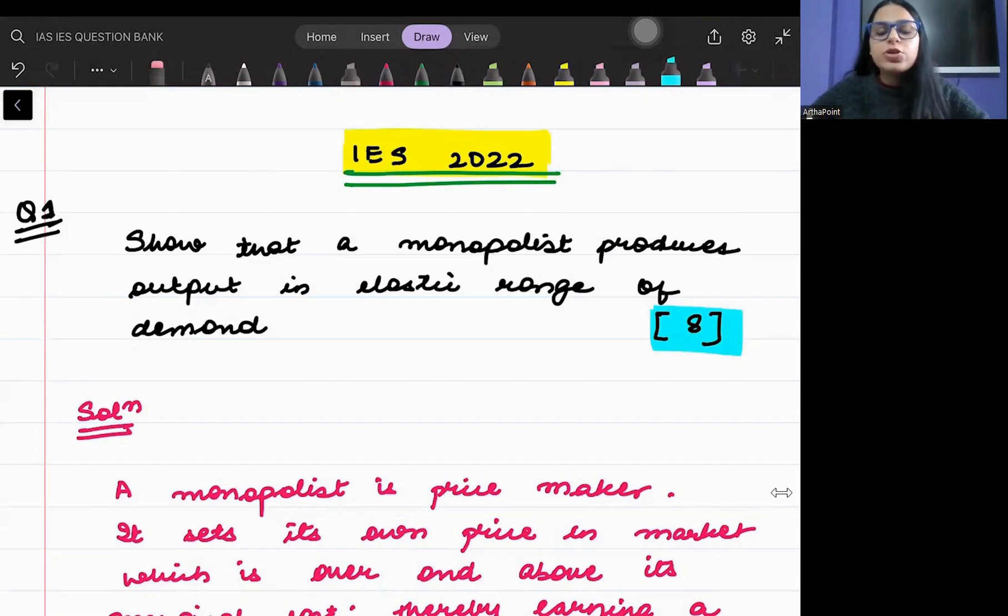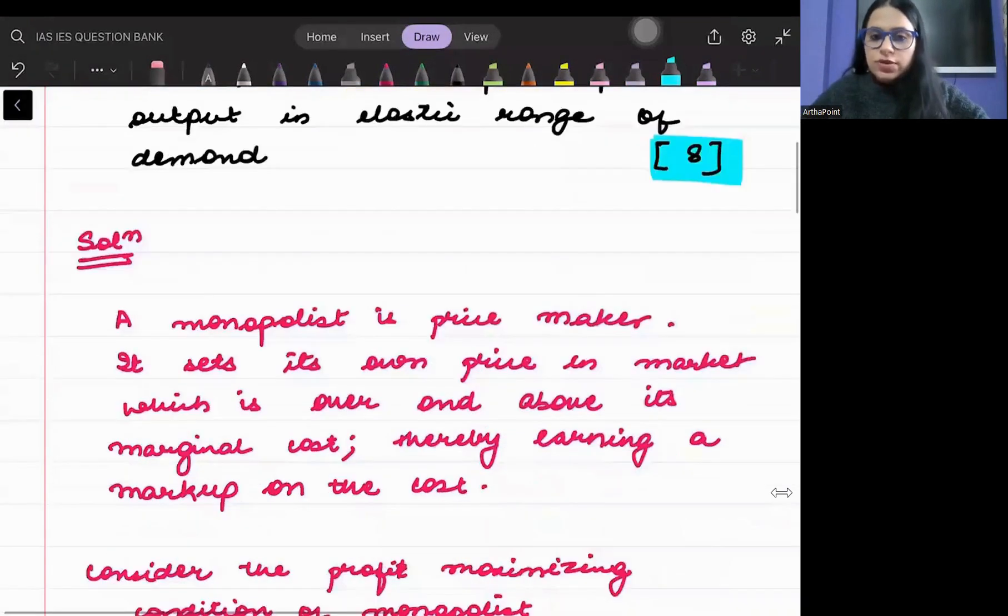Show that a monopolist produces output in the elastic range of demand. We have to prove that a monopolist always produces its output where the demand elasticity is greater than one in absolute values. It is in the elastic range of demand.